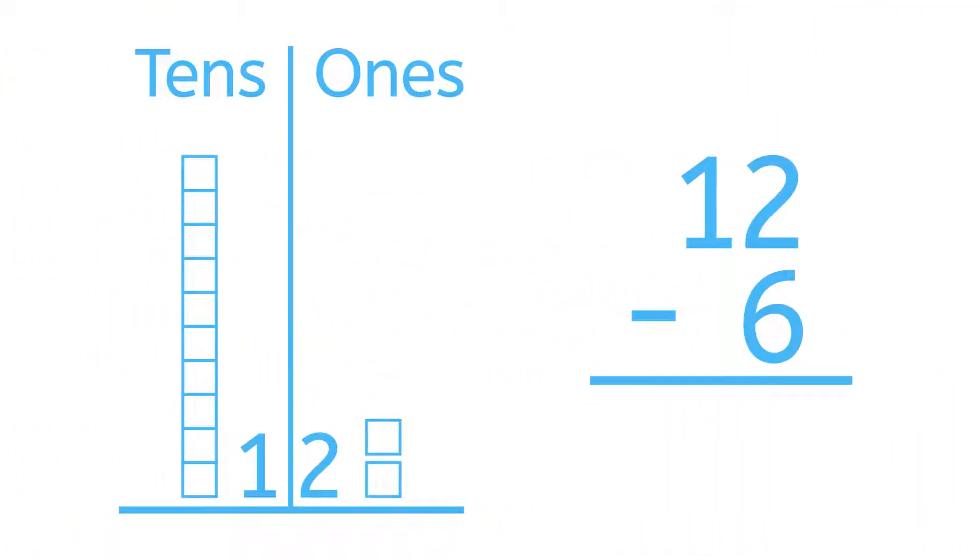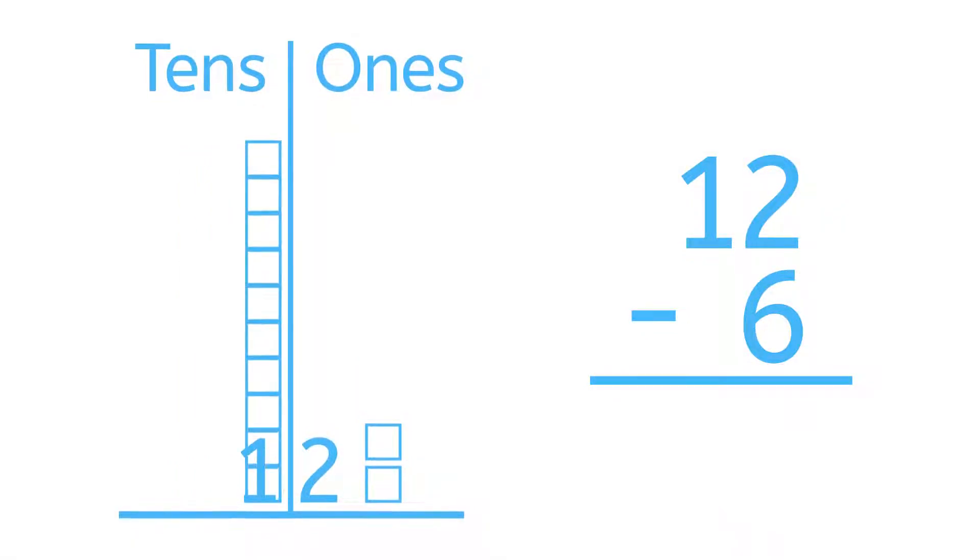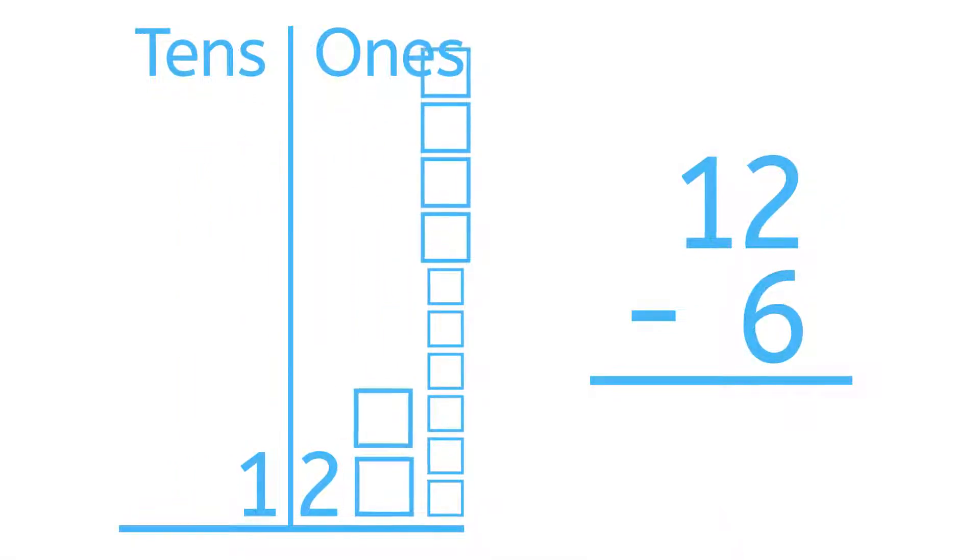Now, let's try it with 12 minus 6. 12 is made up of 10 and 2. With that in mind, what do you think the answer to 12 minus 6 is? See, 12 minus 6 is 6.